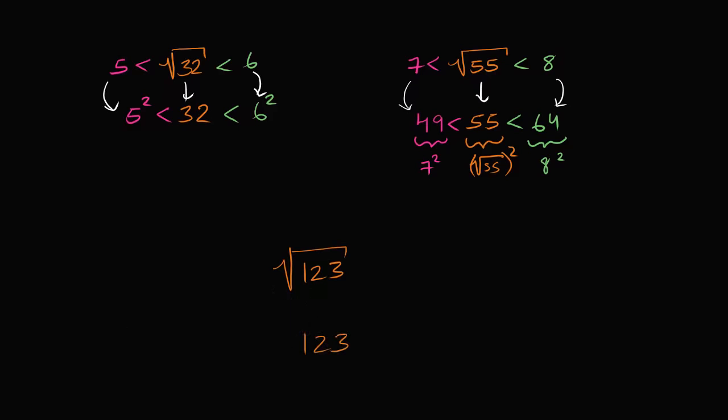And what's the perfect square that is the greatest perfect square less than 123? Let's see, 10 squared is 100, 11 squared is 121, 12 squared is 144. So 11 squared.